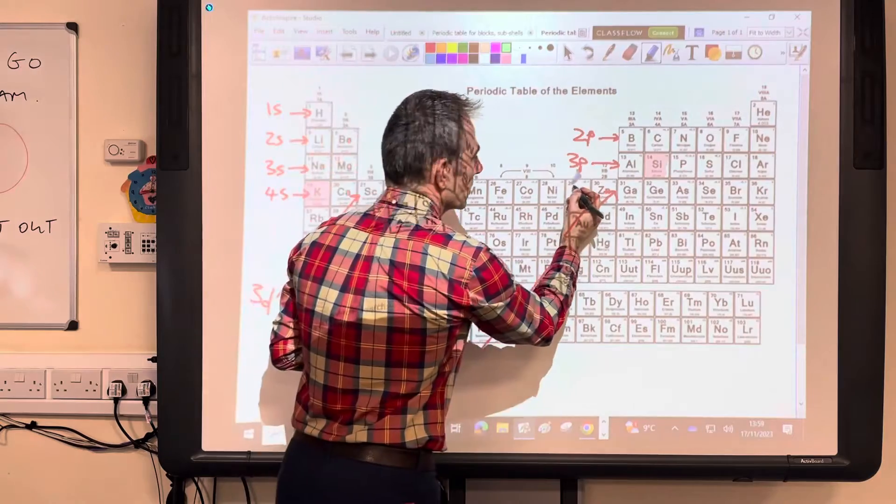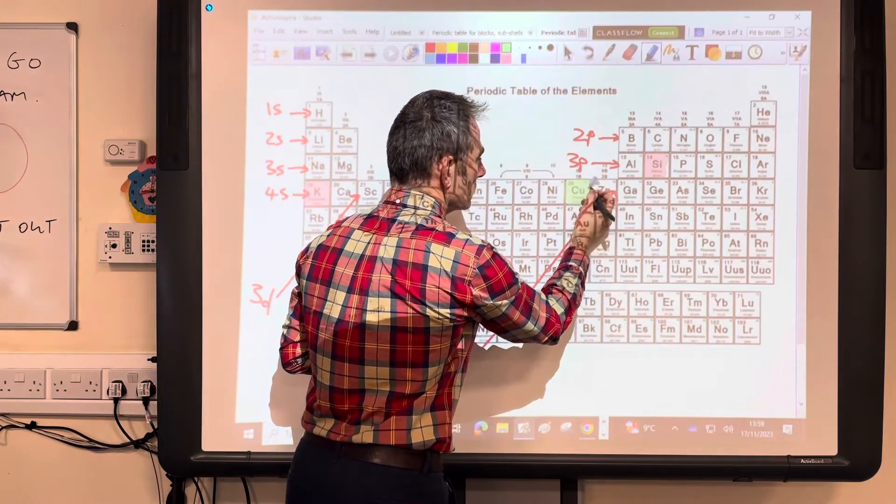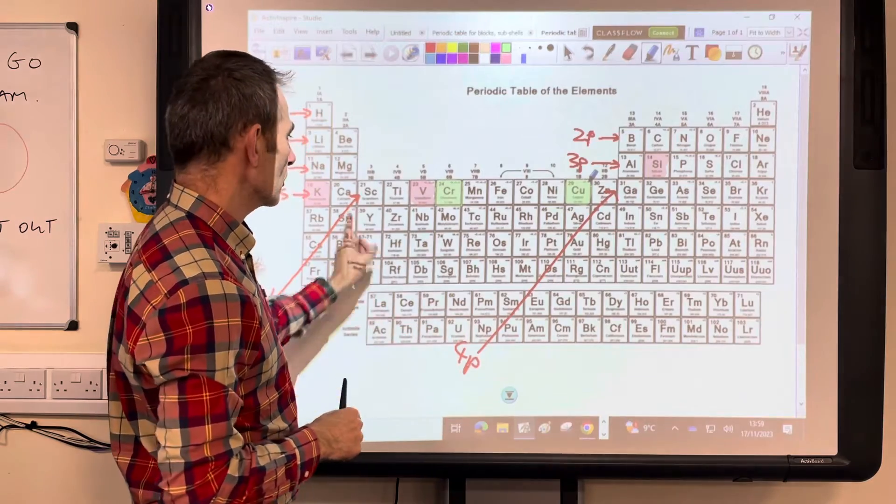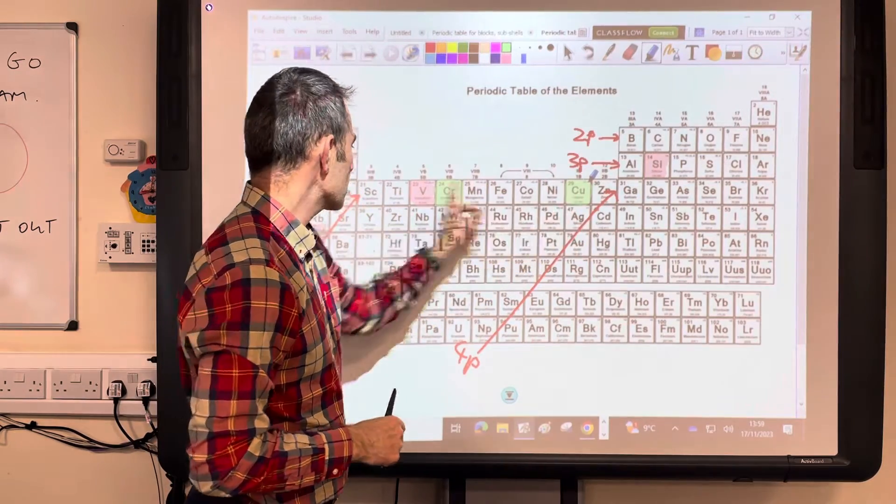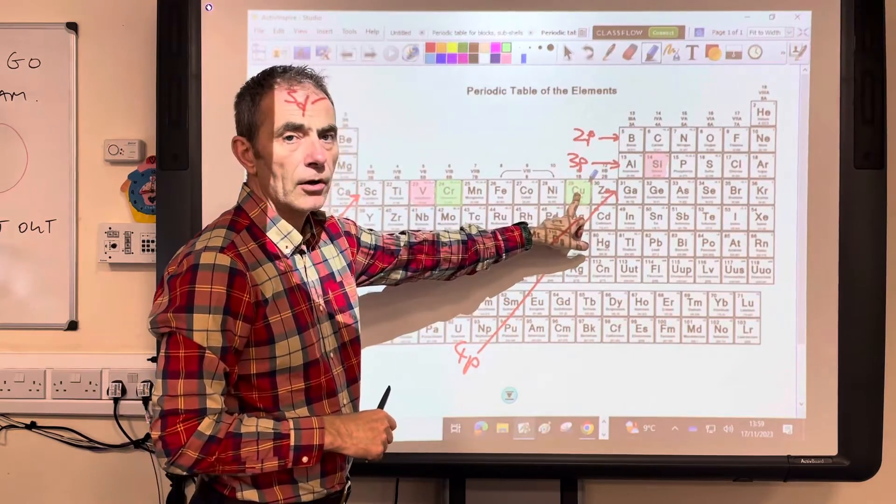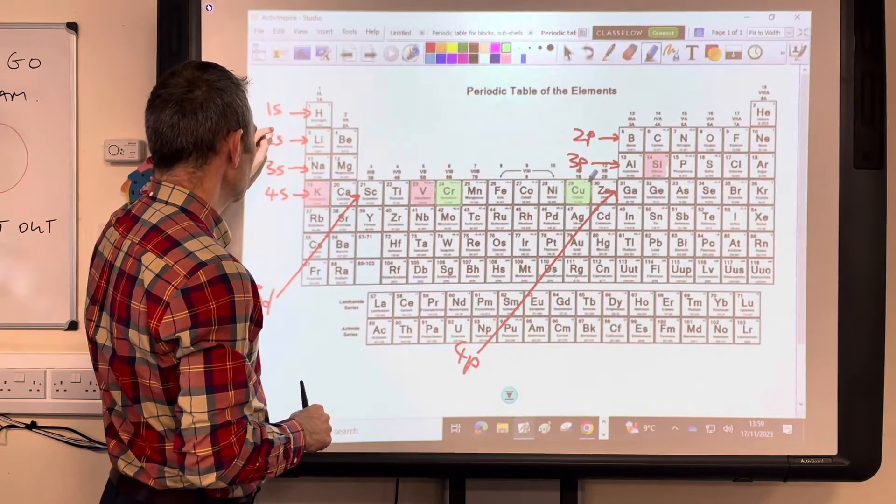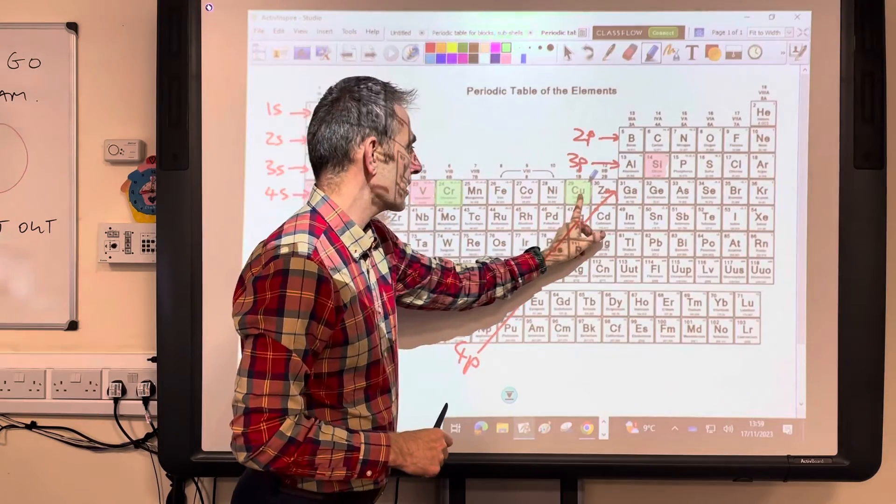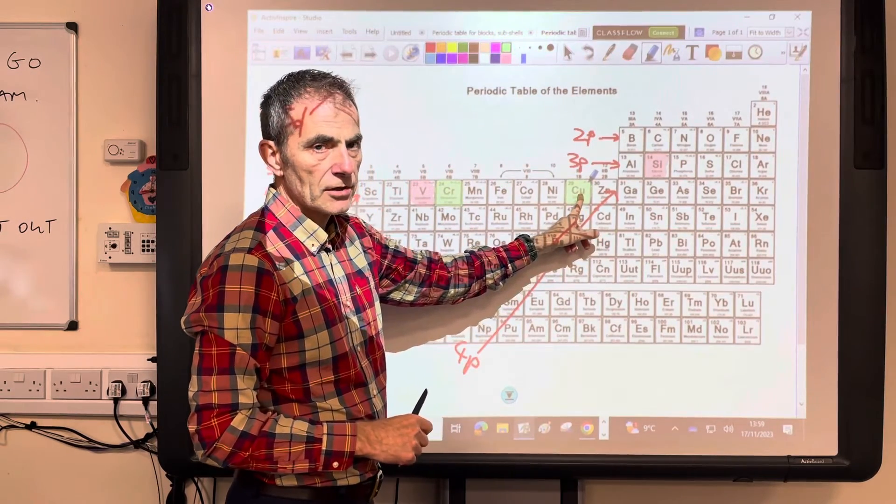The other rogue one is copper. So again, we'll just say what you would expect it to be. Look at where it is in this subshell. It's the ninth one along. So you'd expect all of this full 4s2, 3d9. But it's not that.